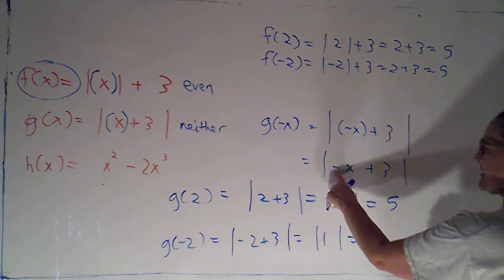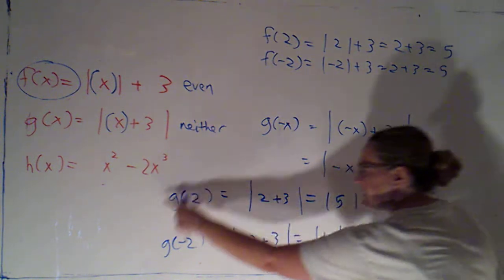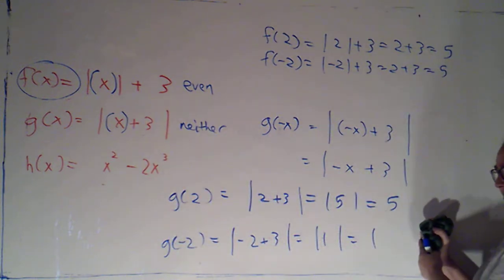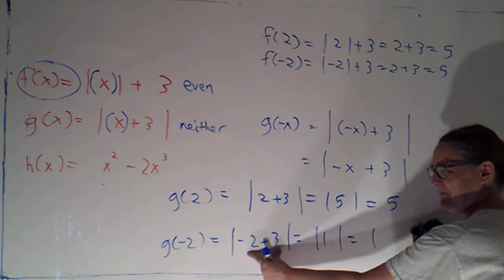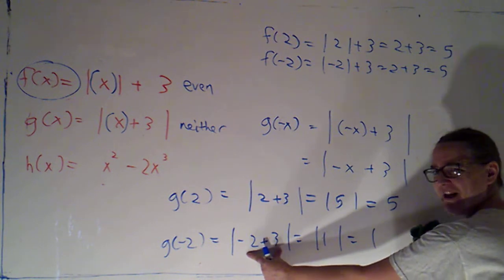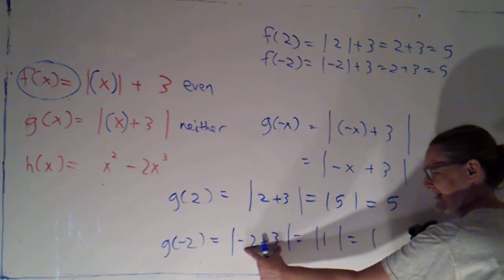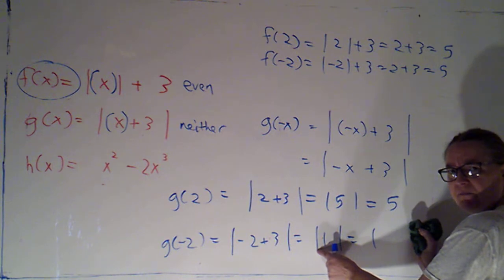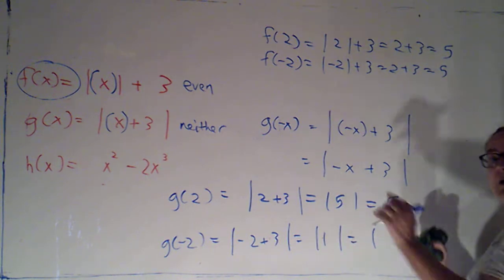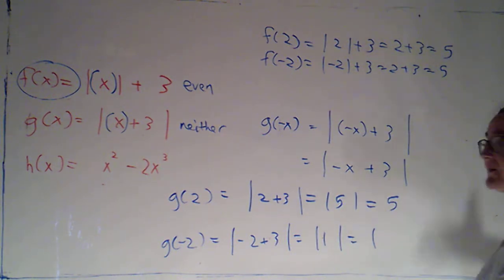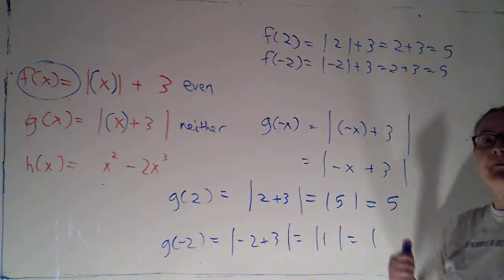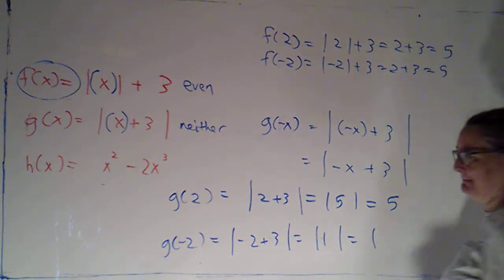You can use a specific example if you're a little bit unsure about whether you can simplify things in a certain way. Here, if you were tempted to get rid of that negative sign, this specific example shows you — no, I couldn't get rid of that negative sign. This is not the same as the absolute value of 2 plus 3, because negative 2 plus 3 is positive 1. So I recommend using specific examples just if there's a case where you're not sure about your next step in simplifying.